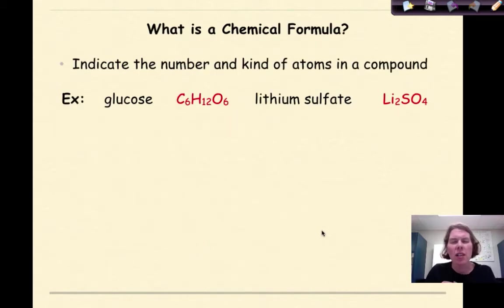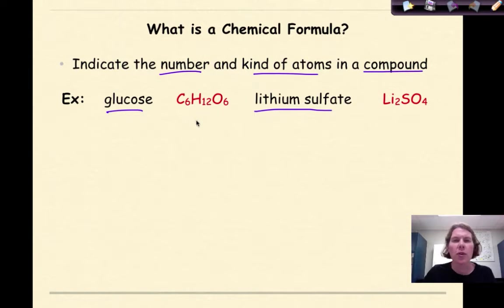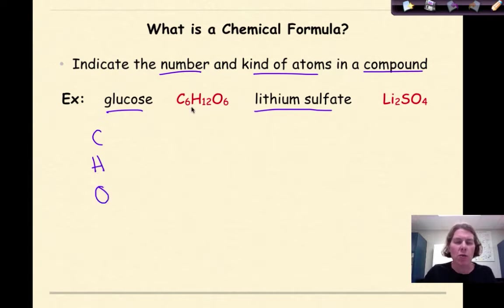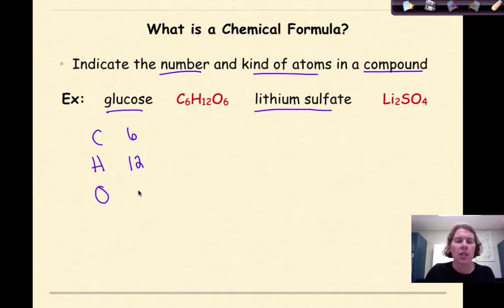What is a chemical formula? It's going to tell us the number and the kind of atoms in a compound. Here we have two compounds: glucose and lithium sulfate. The chemical formula for glucose is C6H12O6, telling me it's composed of three different elements — carbon, hydrogen, and oxygen. The subscripted numbers tell me the mole ratio of atoms that make up this compound: six carbon atoms, twelve hydrogen atoms, and six oxygen atoms.